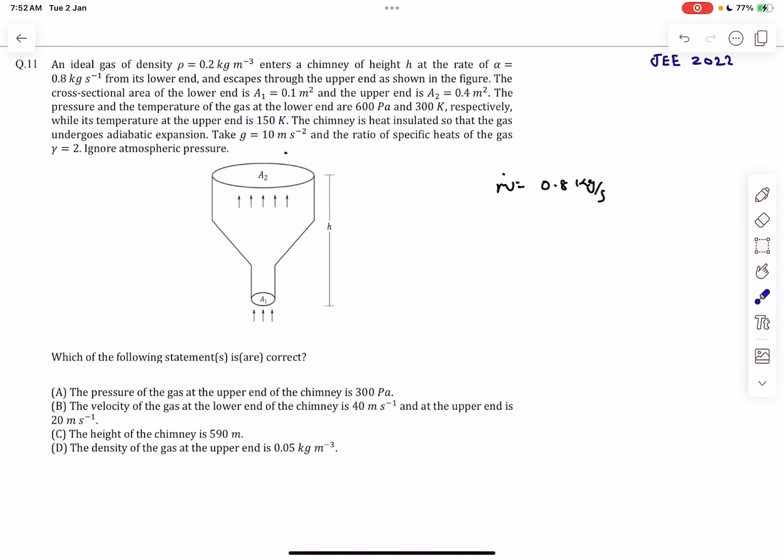The cross-sectional areas are given. The pressure and temperature of the gas at the lower end are 600 Pa and 300 K, and the temperature at the upper end is 150 K. The chimney is heat insulated so the gas undergoes adiabatic expansion and γ = 2. The first information is that the process is adiabatic.